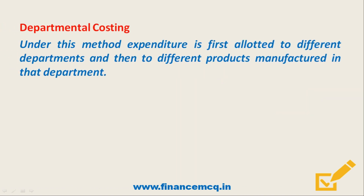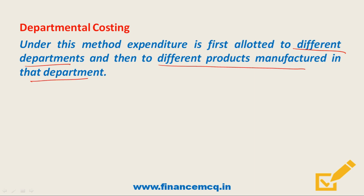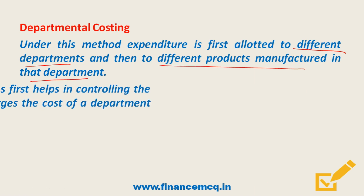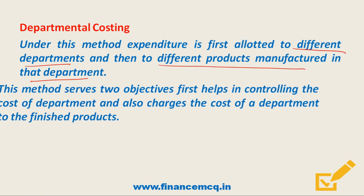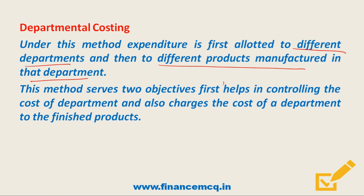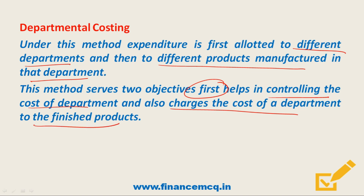Next is departmental costing. Under this method, expenditure is first allotted to different departments and then to different products manufactured in that department. This method serves two important objectives: it helps in controlling the cost of the department, and it also helps in charging the cost of the department to the finished products.